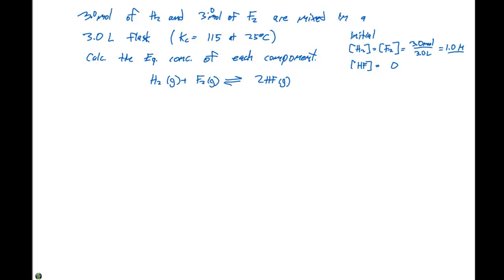This enables us to use our ICE table. We add the concentrations 1.0 for each of the gases on the left and 0 for the HF. Since there is no gas on the right, the equilibrium must shift to the right. So there's going to be plus 2x for the change in moles of HF, minus x and minus x for the change in concentration of fluorine and hydrogen.